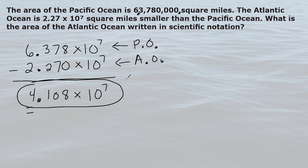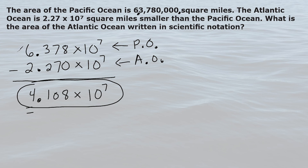As a side note, both values in scientific notation were 10 to the 7th power, which is just shorthand for 10 million. So both values are in terms of 10 million — we have 10 million times about 6, which is 60 million, and 10 million times about 2, which is 20 million. The area of the Pacific Ocean is about 3 times greater than that of the Atlantic Ocean: about 60 million square miles compared to about 20 million square miles.